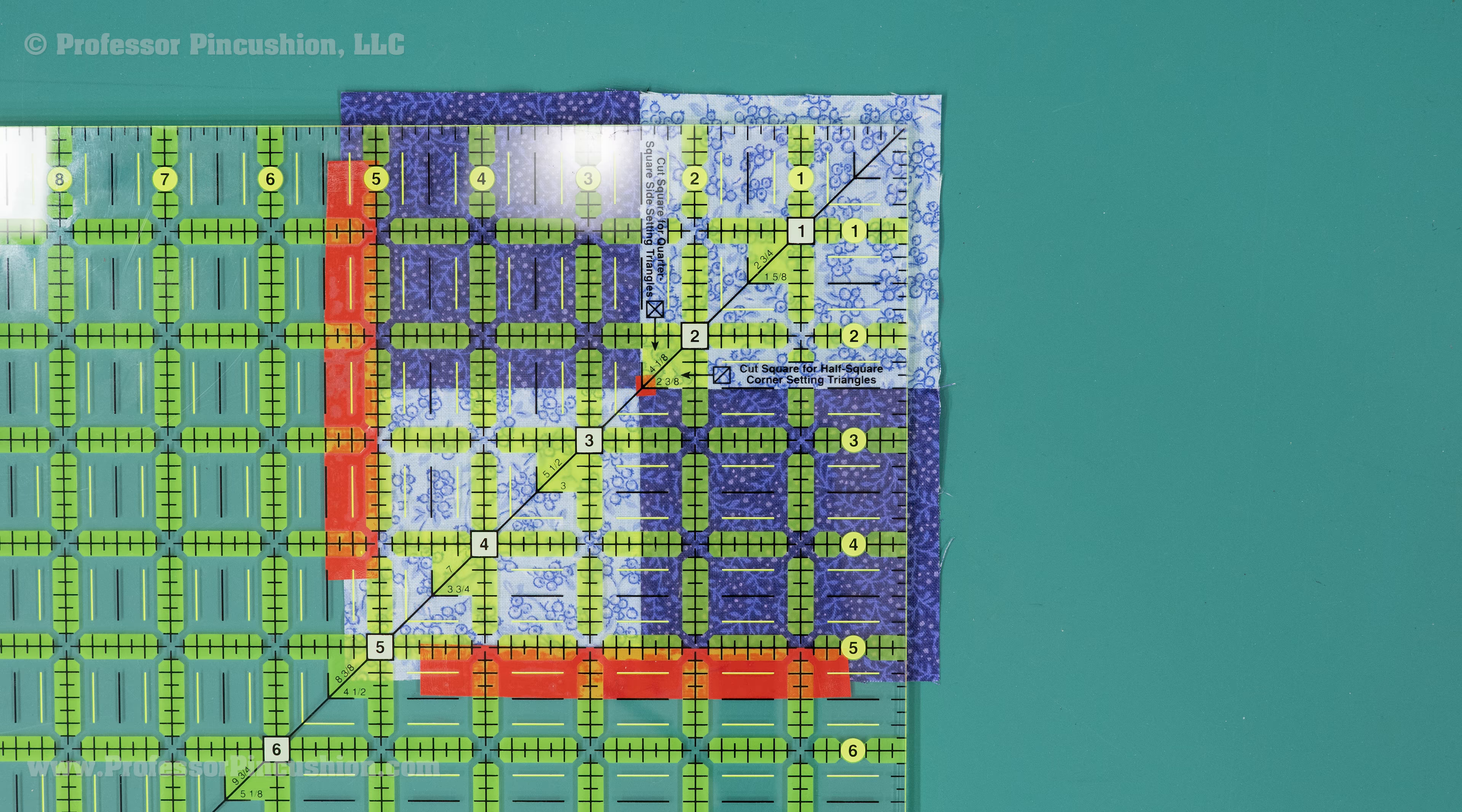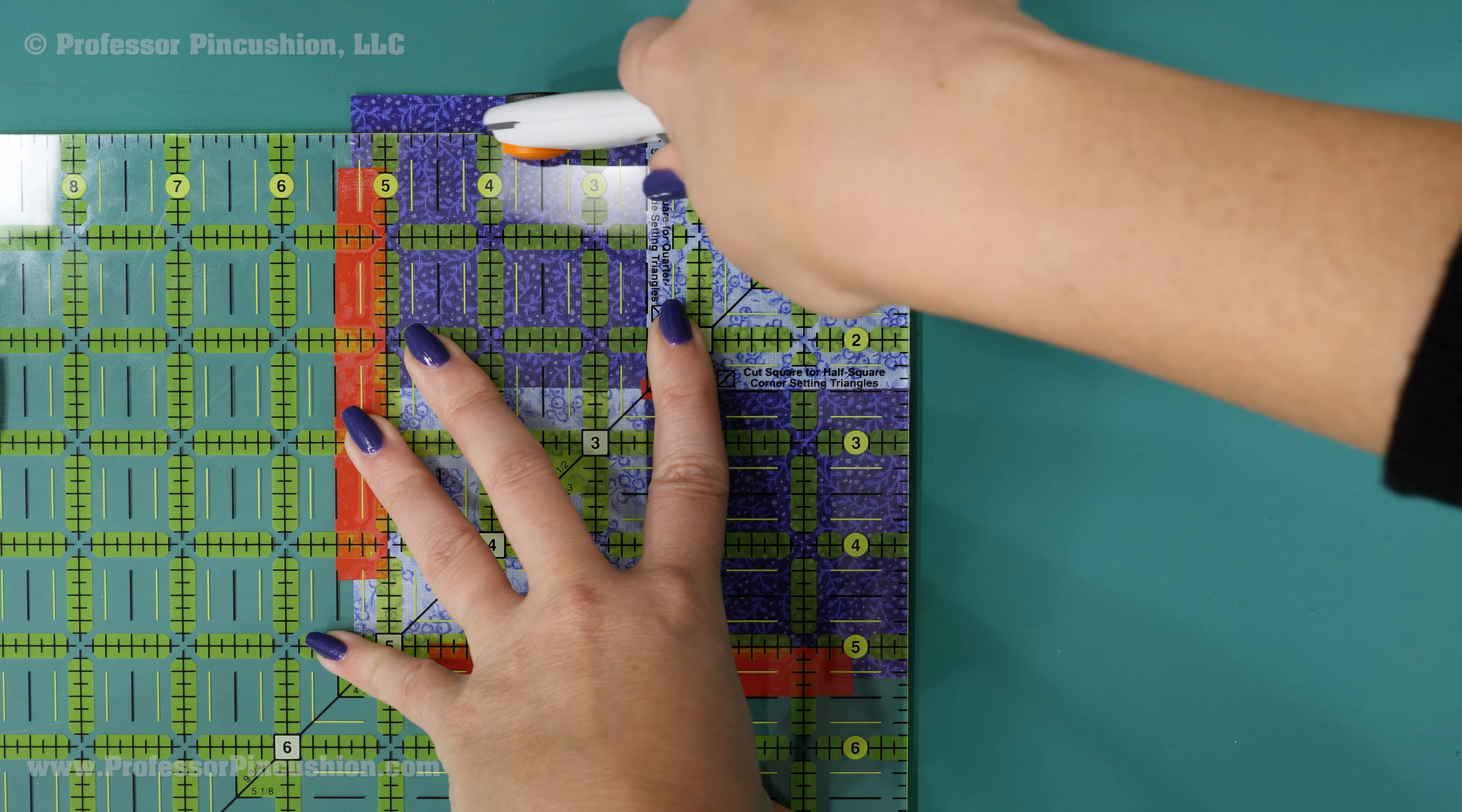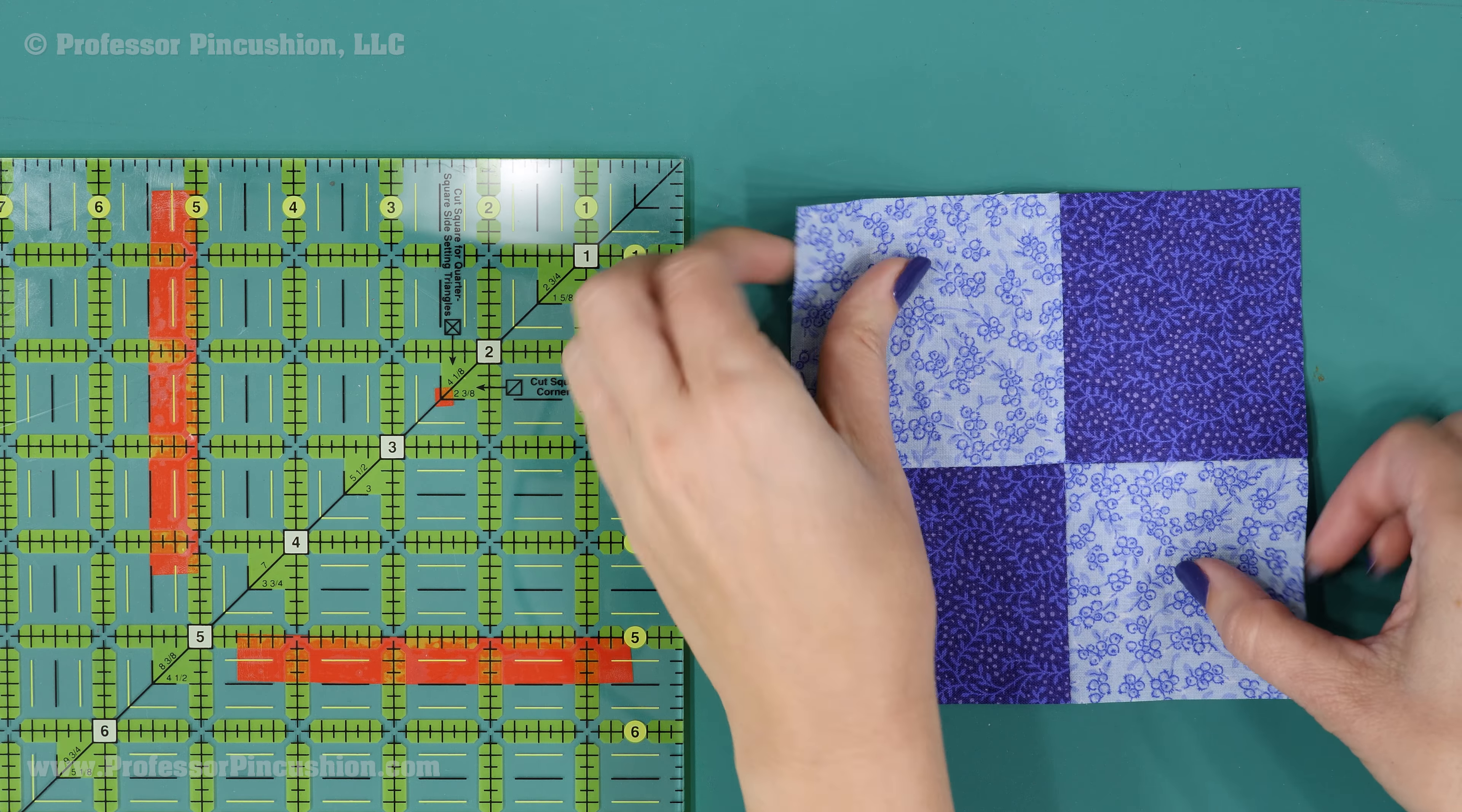If the quilt square is too big, you should have some fabric going past the outside of the ruler and past the tape. Again, it might be a minuscule amount, but it should still be something. Use the rotary cutter to cut on the two edges of the ruler. Lift the ruler, rotate the block twice and replace the ruler.